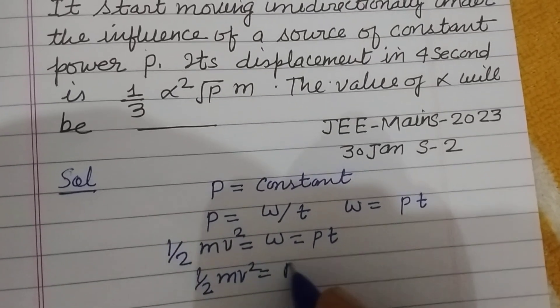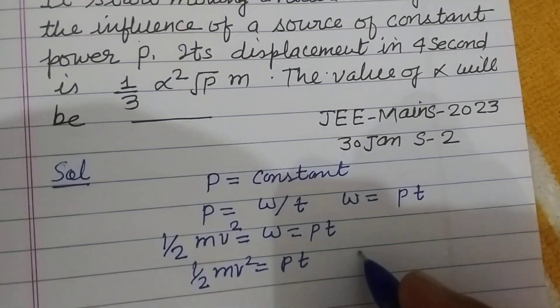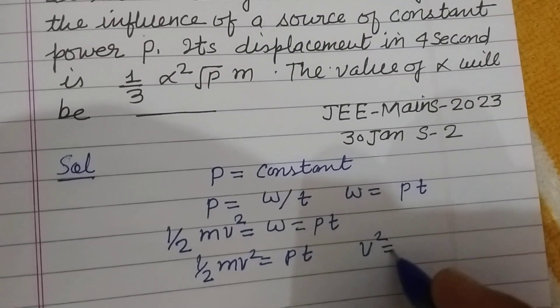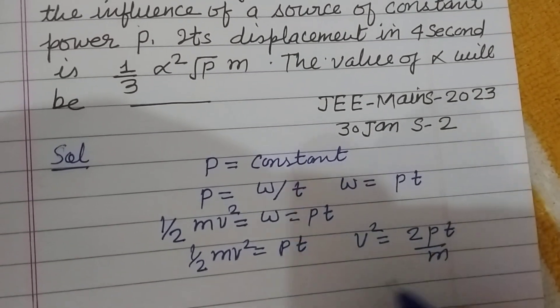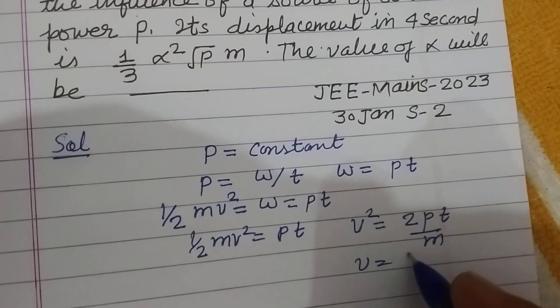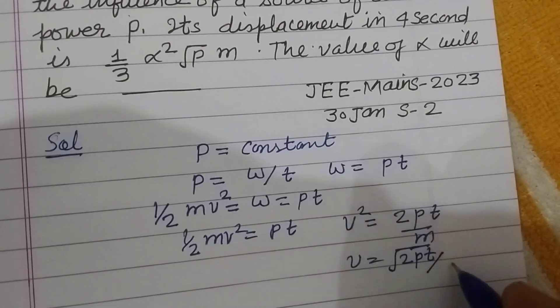Half Mv squared equals PT. It means V squared equals 2PT upon M. Or V equals square root of 2PT upon M.